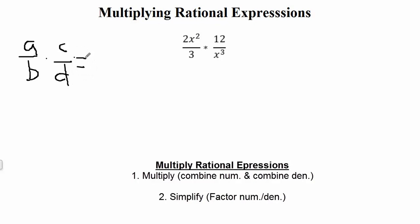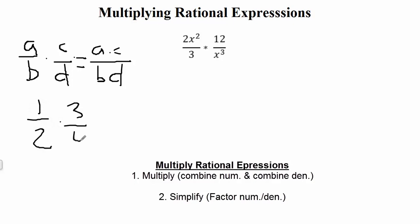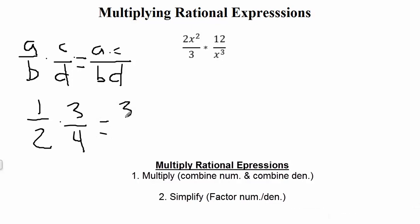So top times top, bottom times bottom. Just to throw in a quick numerical example: typically when we multiply fractions, we would do 1 times 3, giving us 3, over 2 times 4, which is 8. This mirrors the approach we'll use for rational expressions.